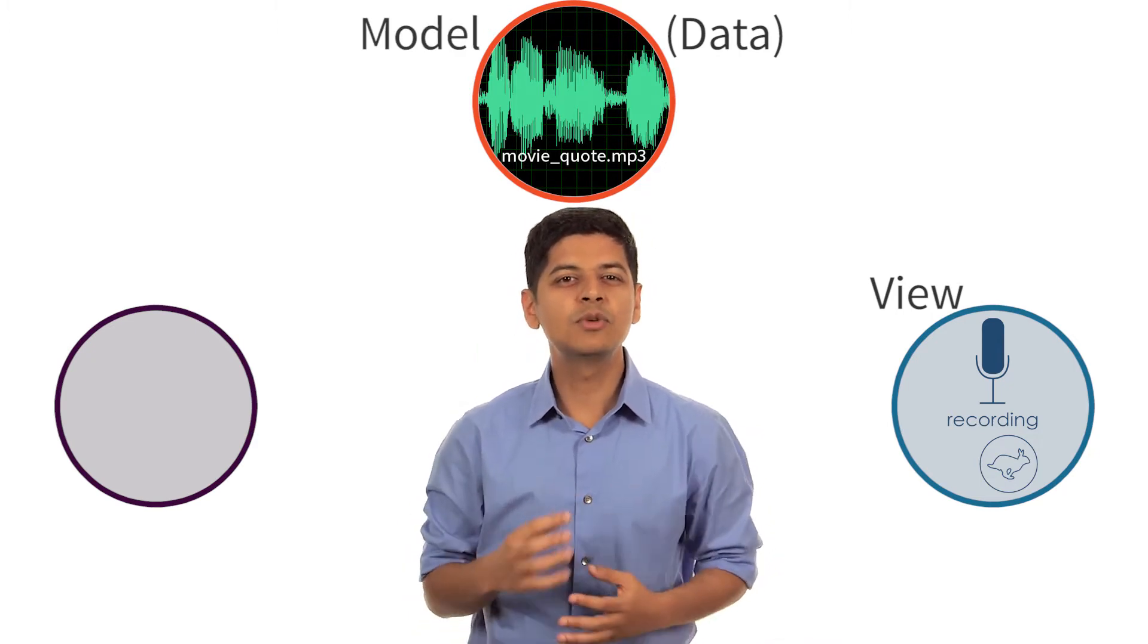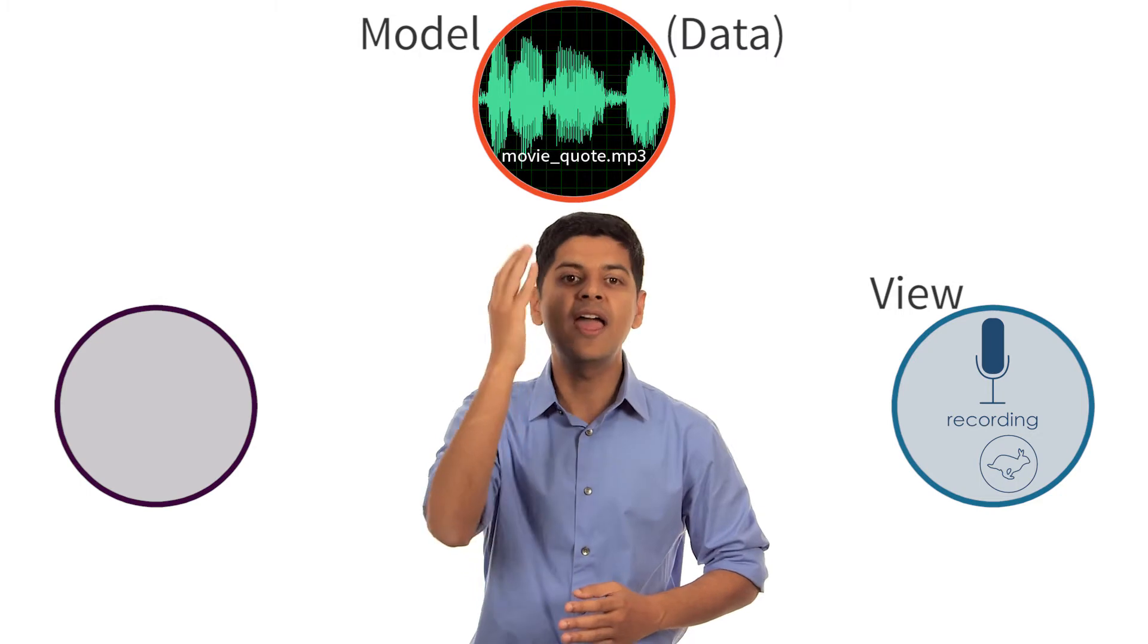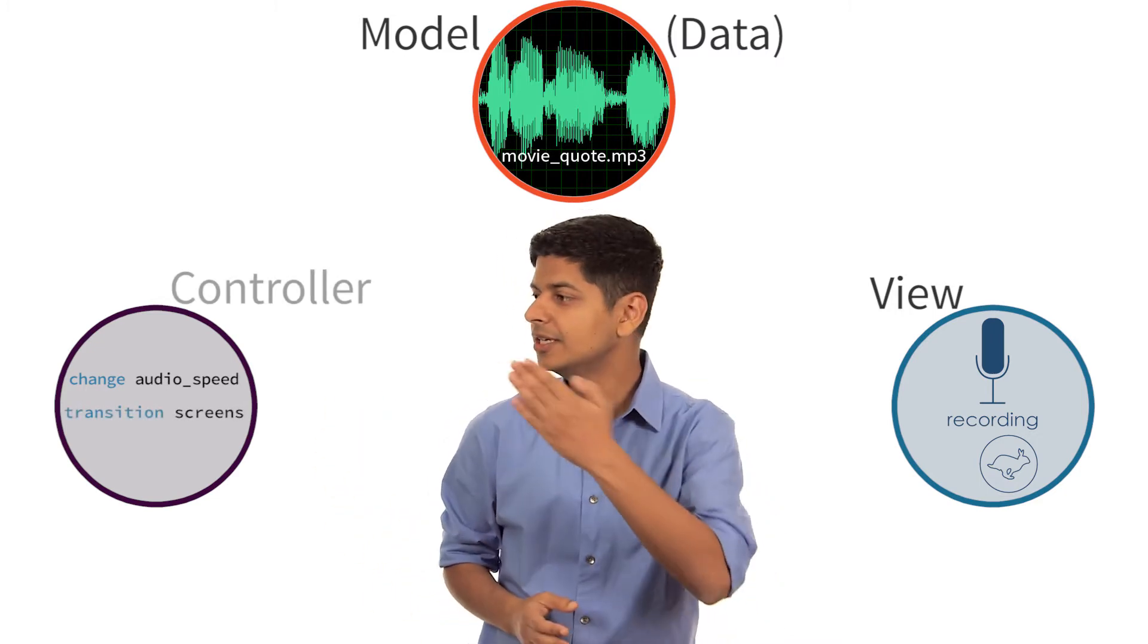And finally, we will write some code to control the view and the model. Here, we will need to change the speed of the recorded audio. And we will also need to learn how to transition between different screens. We can call this category Controller.